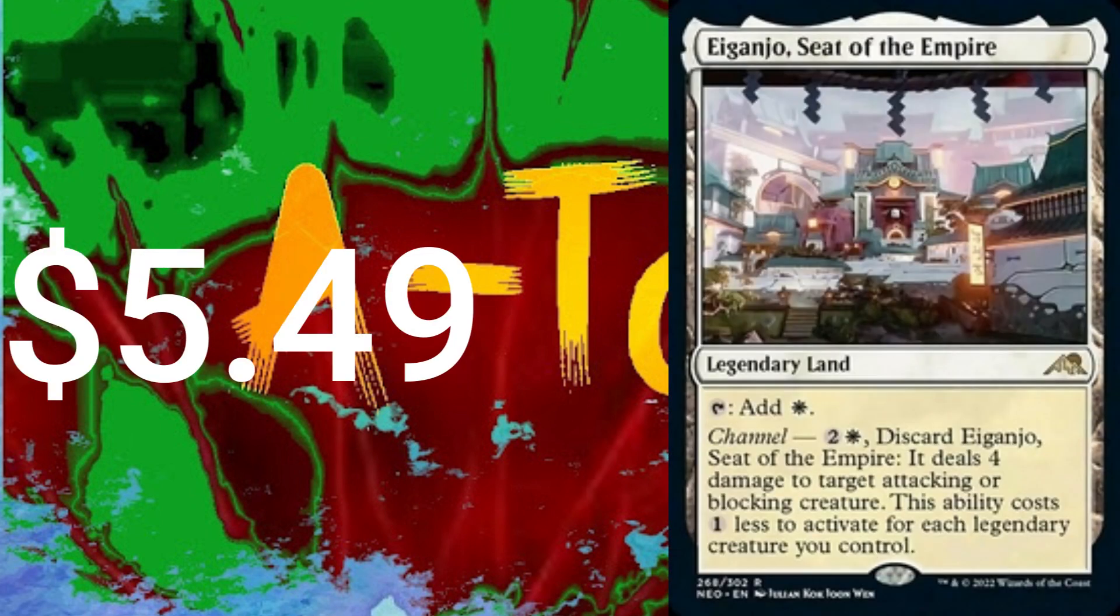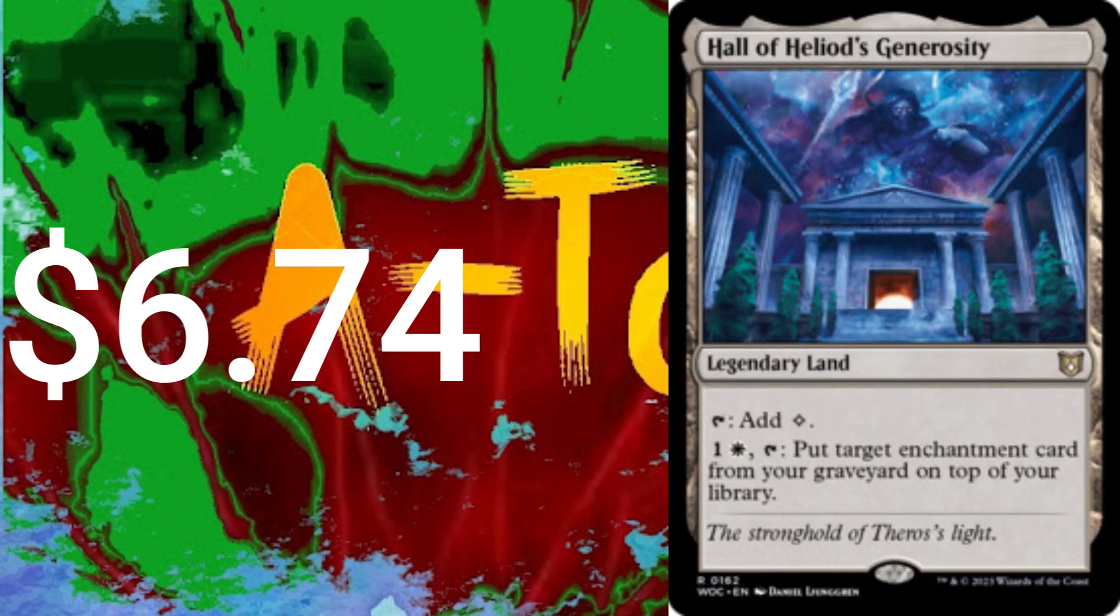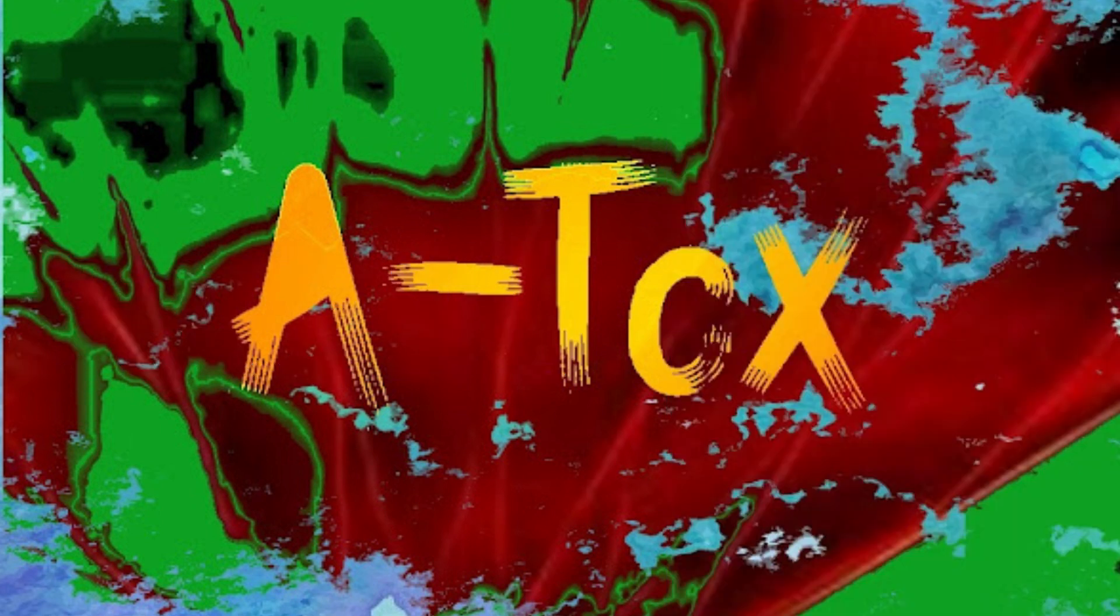Castle Ardenvale, Eiganjo Seat of the Empire, Emeria the Sky Ruin, Hall of Heliod's Generosity to get back our Ghostly Prison, Lotus Field, Nykthos Shrine to Nyx, one Secluded Steppe.